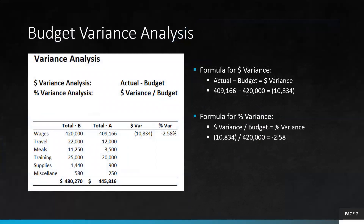For the first line item, which is wages, my budget was $420,000 and my actual came in at $409,166. The dollar variance is $409,000 minus $420,000, giving an unfavorable variance of negative $10,834. That's almost a 2.58% difference. You can see the formula here used to calculate that negative 2.58%.